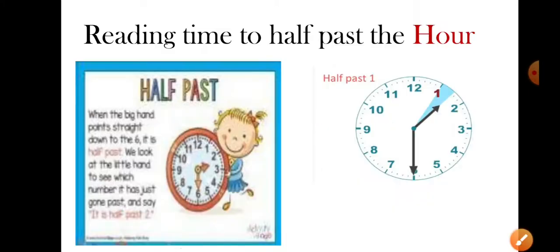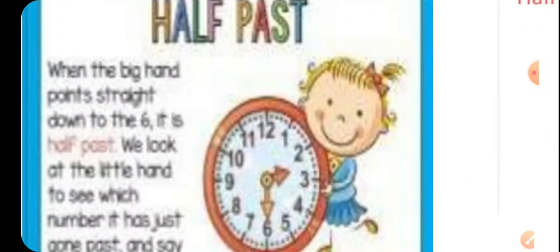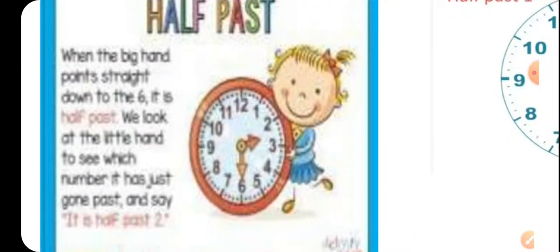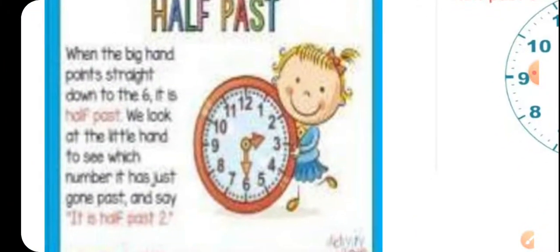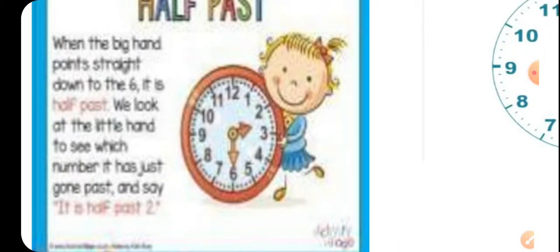Now let us see the next part — reading time to half past the hour. This we have not done before. We have seen how to read three o'clock when the hour hand is on three and the minute hand is on twelve. Today we will learn about half past. When the big hand points straight to the six, it is half past — we look at the little hand to see which number it has just gone past, and say it is half past two.